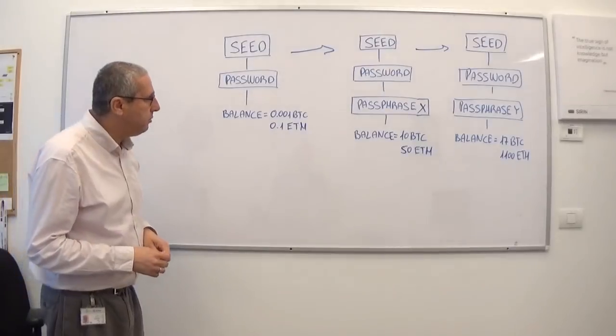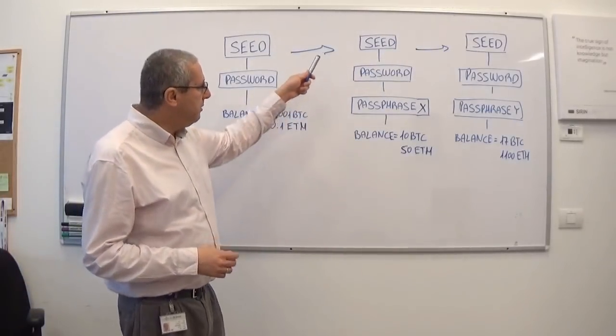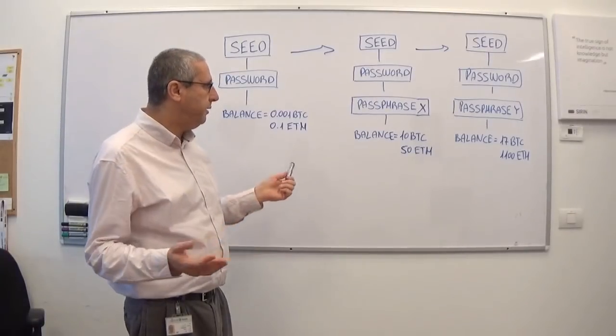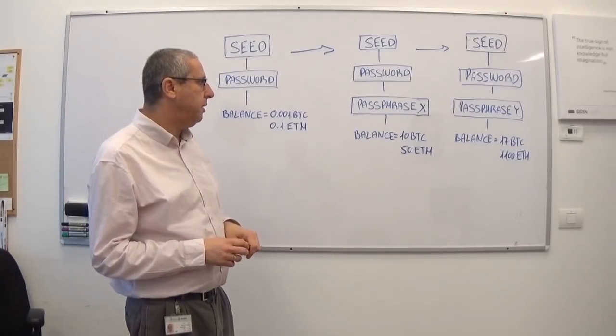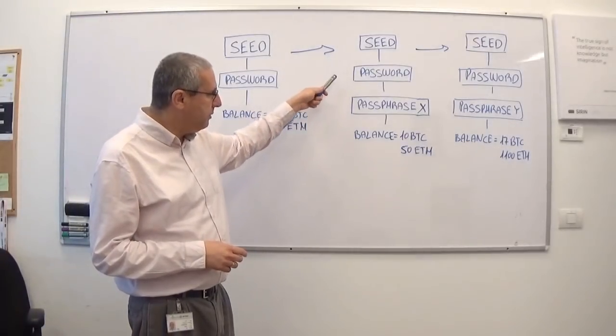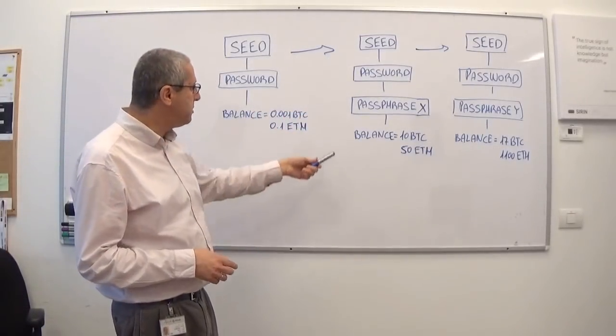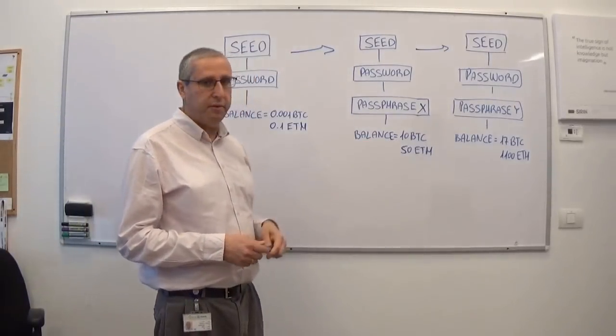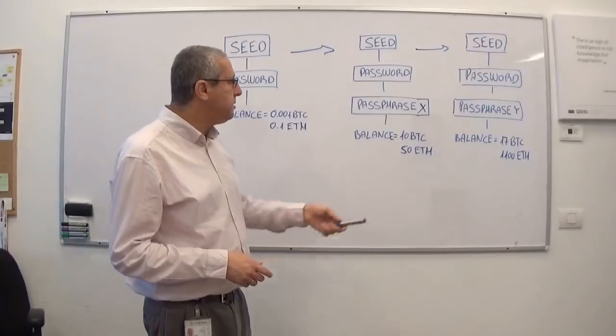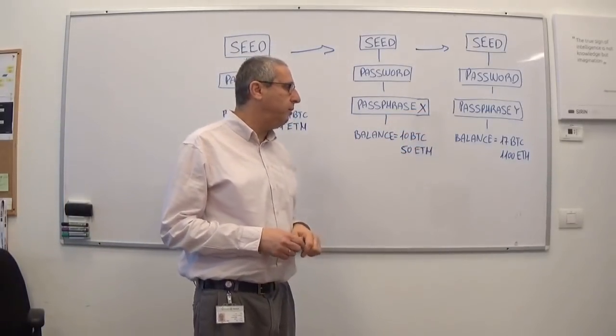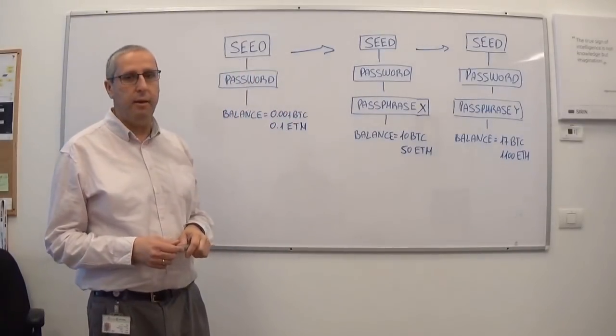It could have unlimited amounts of passphrases, meaning each one of them is creating a different wallet. So in this example I have, in Passphrase X, 10 Bitcoin and 50 Ethereum. And in this example, Passphrase Y, I have 17 Bitcoin and 1.1K Ethereum.